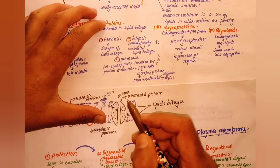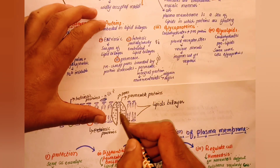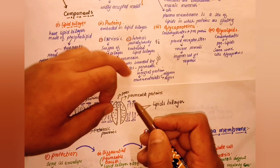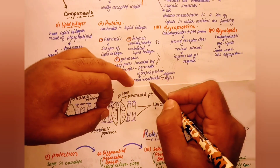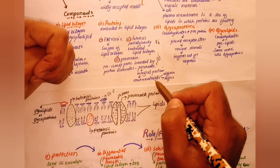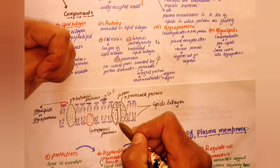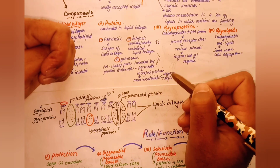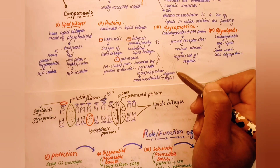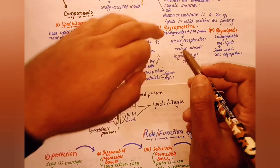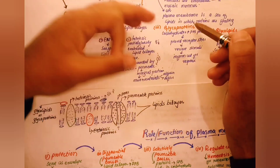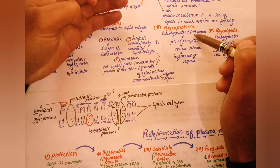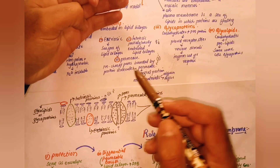The integral protein is embedded within the lipid bilayer. It regulates the movement of materials across the membrane. Glycoprotein is formed when carbohydrates combine with plasma membrane proteins.